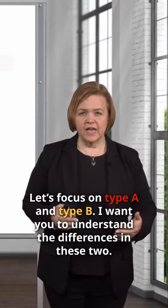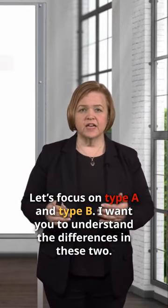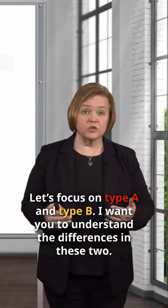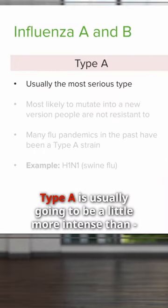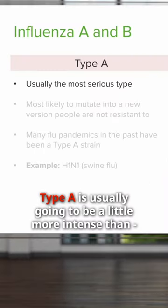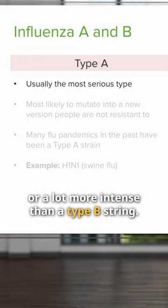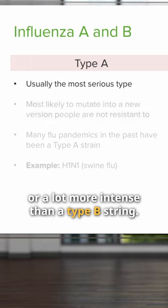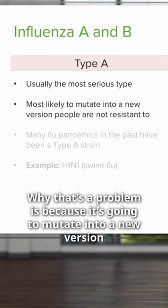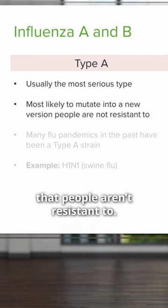Let's focus on type A and type B and understand the differences between the two. Type A is usually a lot more intense than a type B strain. This one is most likely to mutate, and the problem is it mutates into a new version that people aren't resistant to.